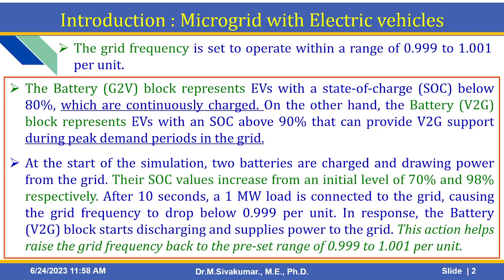These are the basic concepts of this example. At the start of the simulation, two batteries are charged and drawing power from the grid. Their state of charge values increase from an initial level of 70% and 98% respectively. After 10 seconds, a 1 MW load is connected to the grid.